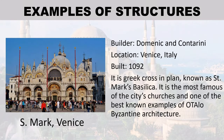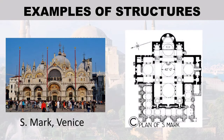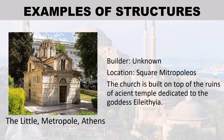St. Mark's Basilica, Venice — built by Dominic Contarini, located in Venice, Italy, approximately built in 1092. It is Greek cross in plan and is the most famous of the city's churches and one of the best known examples of Byzantine architecture. The Little Metropole, Athens — located at Plateia Mitropoleos; the church is built on top of the ruins of an ancient temple dedicated to the goddess Eileithyia.